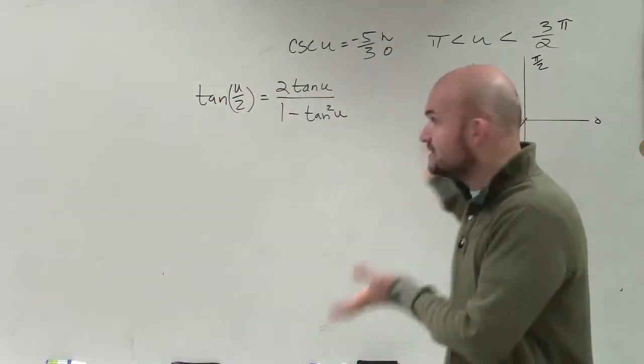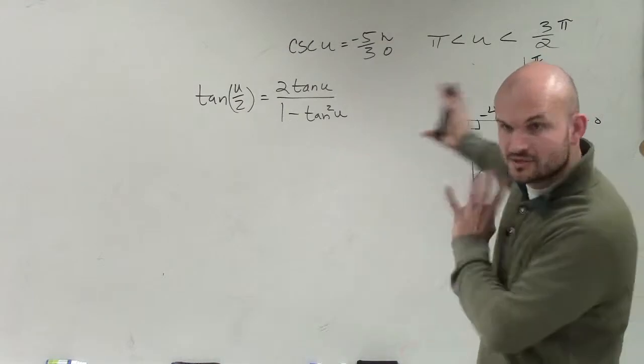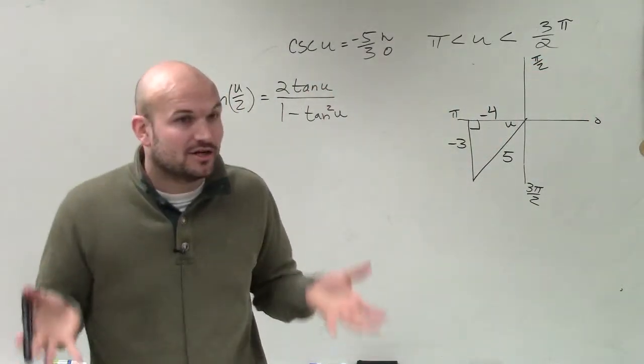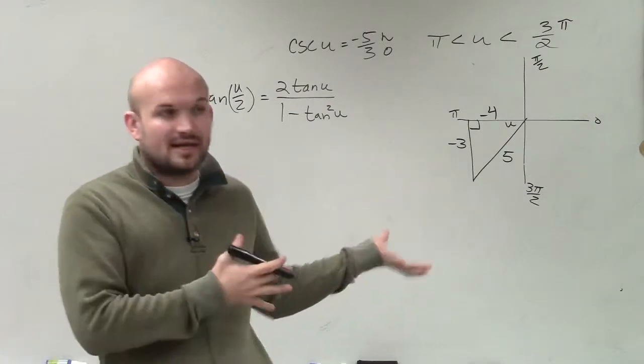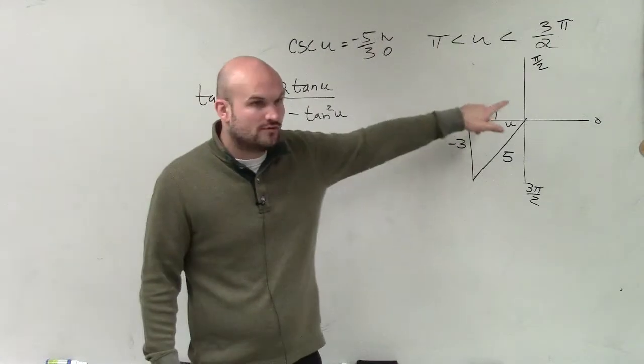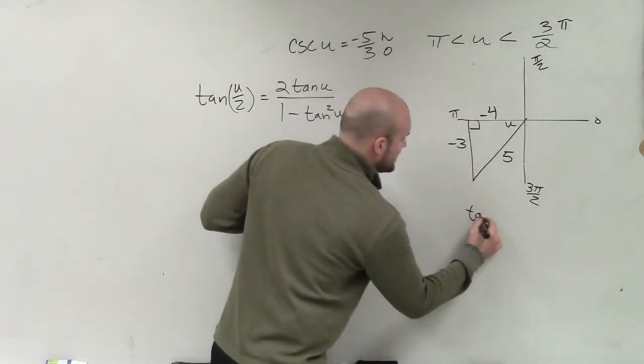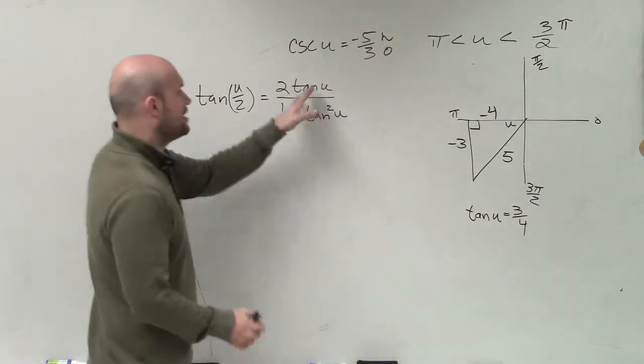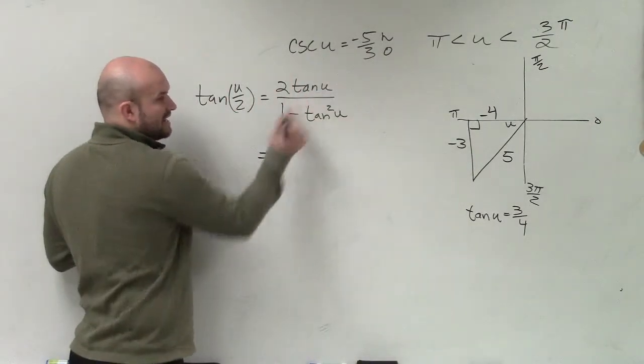Everybody, in this case, this is all old stuff. Everything is old from this point on. But now, all you're doing is taking your angle and plugging it in. So you guys can see that tangent of this angle is a positive 3 over 4. Tangent of my angle u is positive 3 over 4. So I plug in 3 over 4 in for tangent of u.